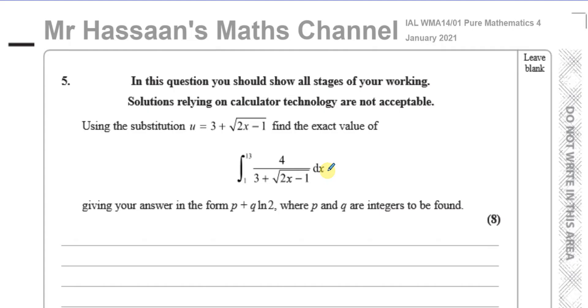Integration by substitution, there's different ways that people do it. I find by far the easiest way is the following way. We have to keep in mind the objective. The objective is to integrate this function with respect to x. Let's call this function y equals 4 over 3 plus the square root of 2x minus 1.